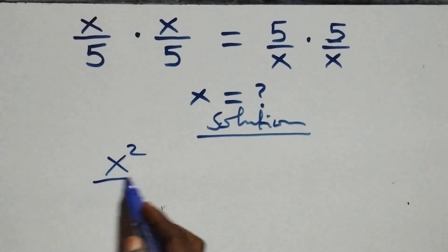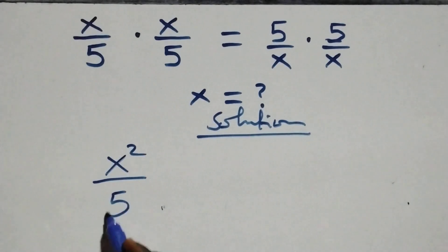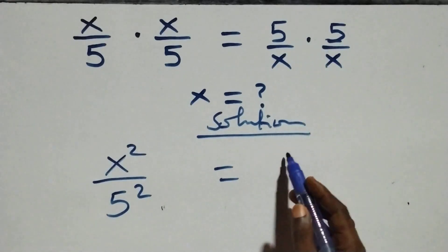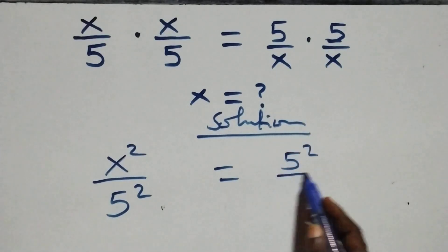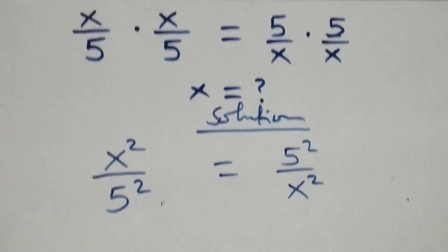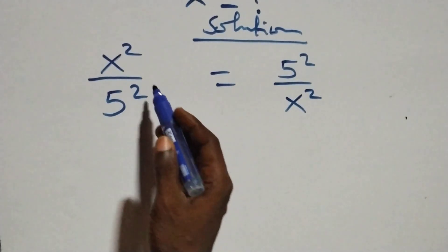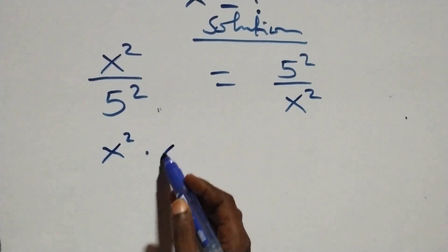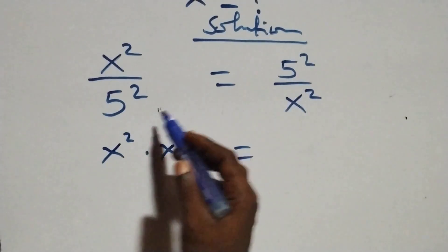10 over 5 times 5, plus 5 squared, equals this side as well — 5 times 5 plus 5 squared. Then 10 over x times x gives us x squared. Next step: we cross multiply, x squared times x squared equals 5 squared times 5 squared.